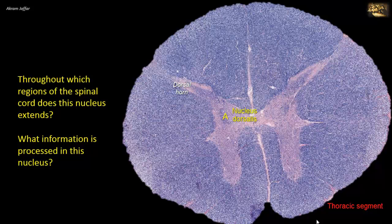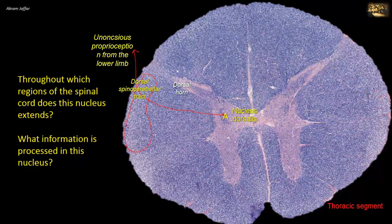The nucleus processes unconscious proprioception information from the lower limb to the cerebellum. Its input is derived from axons ascending in the dorsal columns. Neurons in the nucleus give rise to axons that ascend ipsilaterally in the dorsal spinocerebellar tract, which is uncrossed and enters the cerebellum through the inferior cerebellar peduncle. Proprioceptive information that reaches conscious level must reach the cerebral cortex via the posterior funiculus, constituting the dorsal column medial lemniscus pathway, not passing through Clark's nucleus.